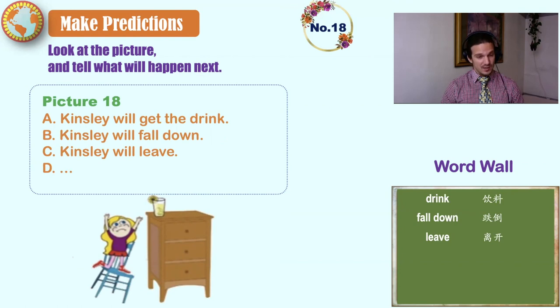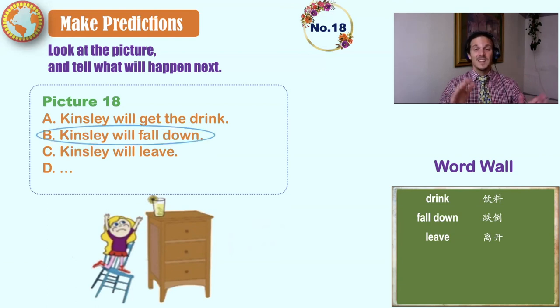I see the drink. I see Kinsley reaching for the drink. Maybe she will get the drink. But look at the chair. The chair is falling over. Maybe Kinsley will fall down too. Never rock your chair or you will fall.